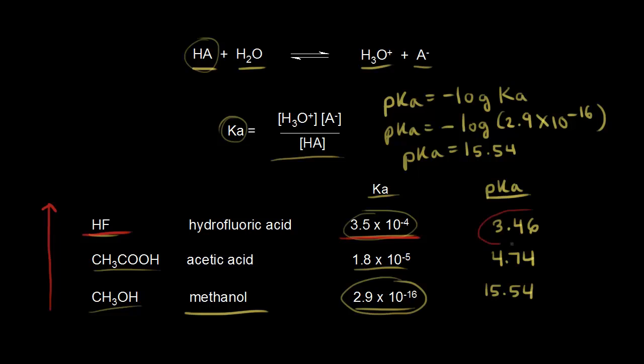But notice it has the smallest value for the pKa. So the lower the value for pKa, the more acidic your acid. So 3.46 is lower than 4.74, and so hydrofluoric acid is more acidic than acetic acid.